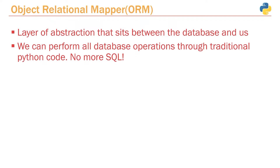However, there are other methods. One of the popular ways of working with databases is using what's referred to as an Object Relational Mapper, or an ORM. An ORM is a layer of abstraction that sits between the database and our FastAPI application. So we never actually talk directly to a database anymore — instead, we talk to the ORM, and then the ORM will actually talk to our database.